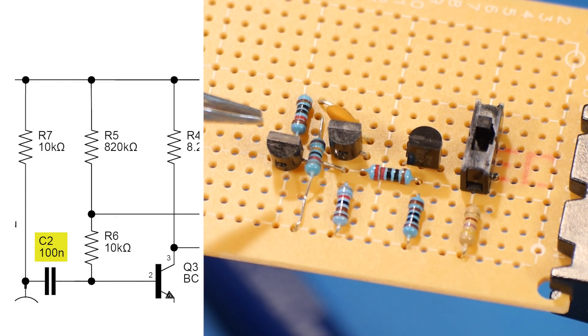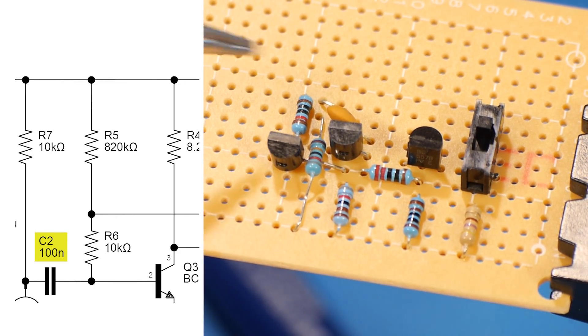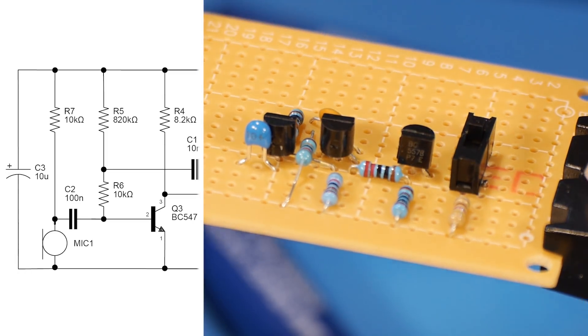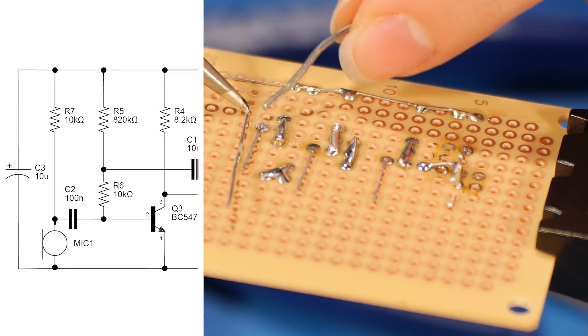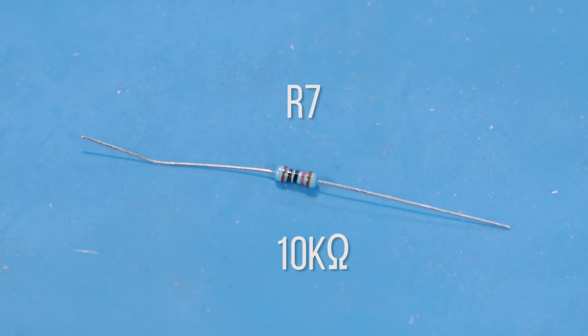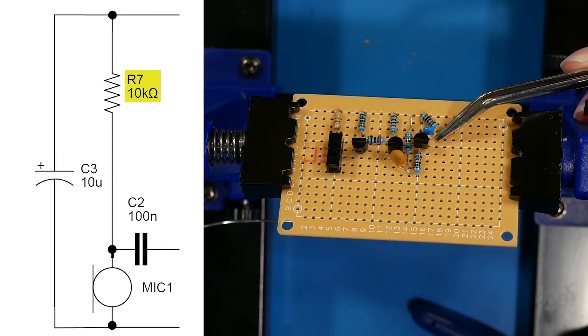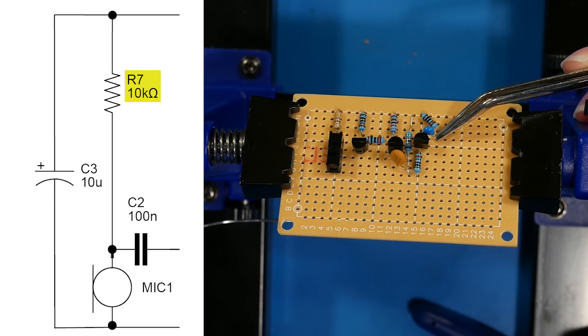C2 has to connect to the base of Q3 and R6 on one end and then R7 and the mic on the other end. Now let's place C2, which connects to Q3 and R6 on one side and R7 and the microphone on the other side. Now let's place R7, which connects to the ground plane and then capacitor C2 and eventually the microphone.